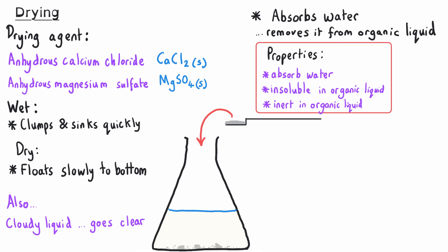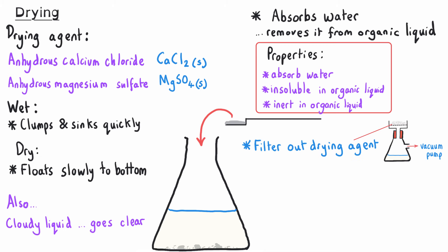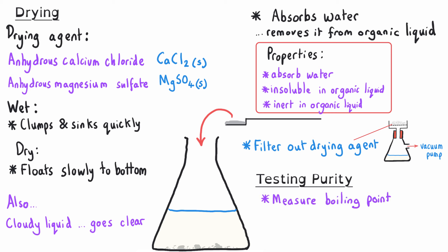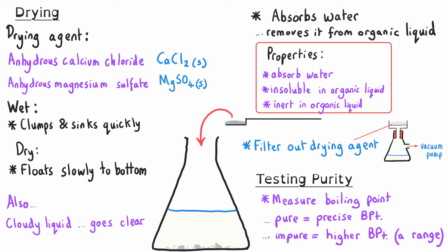Once we have successfully dried our organic liquid, we need to remove the drying agent, and we would normally prefer to use vacuum filtration to do so. We will be left with our target organic liquid in the bottom of the conical flask. One final thing we can do is test its purity by measuring its boiling point, looking for a very sharp specific boiling point and making sure it does not boil over a range of different temperatures. If it did, it would definitely be impure.